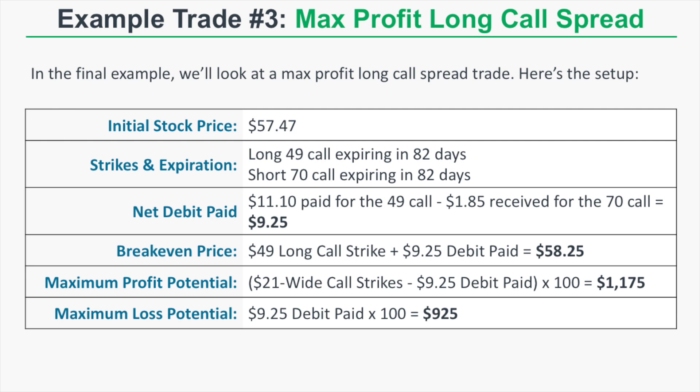Example 3 shows a scenario where a trader realizes the maximum profit on a long call spread. The initial stock price is $57.47, and we're buying the 49/70 call spread expiring in 82 days. We pay $11.10 for the 49 call and collect $1.85 for the 70 call, for a net debit of $9.25. The break-even price is $49 plus $9.25, which is $58.25. The maximum profit potential is the $21-wide spread minus the $9.25 debit times 100, giving $1,175. The maximum loss potential is $9.25 times 100, which is $925.